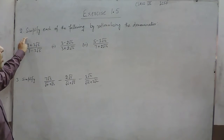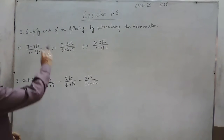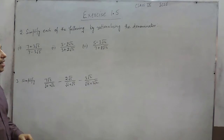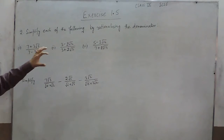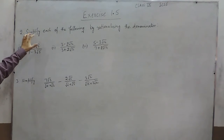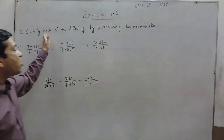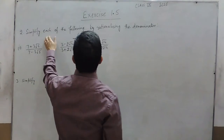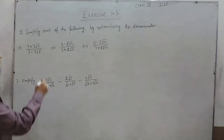Hello everyone. Question number 2 of exercise 1.5 is: simplify each of the following by rationalizing the denominator. When we say simplify, that actually means we have to rationalize the denominator.